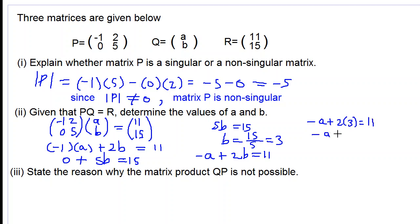Negative a plus 6 is equal to 11. Let's subtract 6 from both sides. So negative a is equal to 11 take away 6 which is 5. And therefore a is equal to negative 1 times 5 which is negative 5.